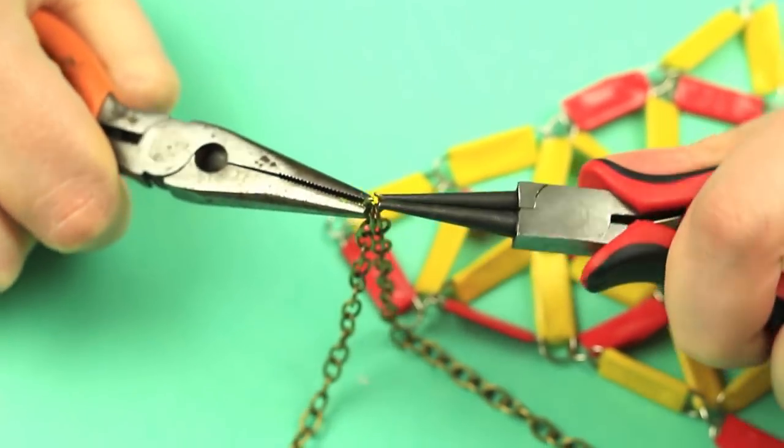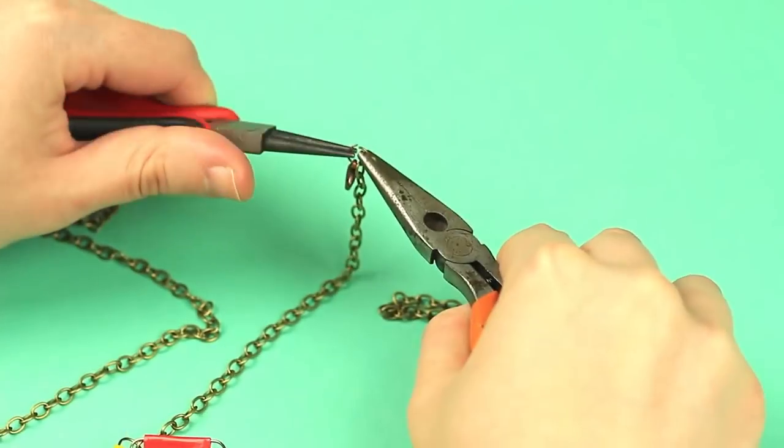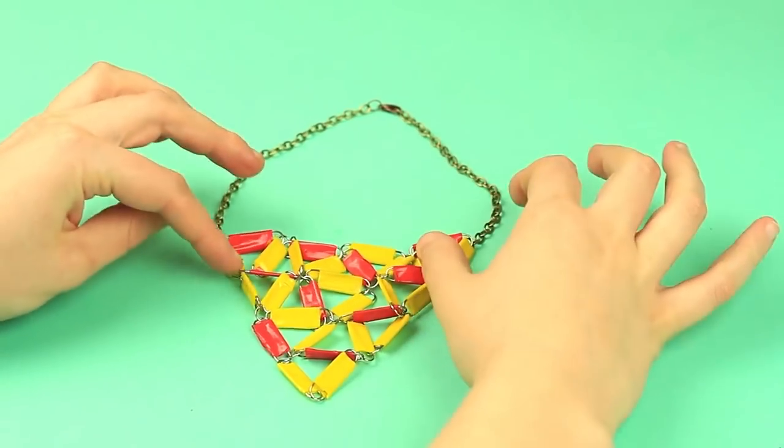Put the two vertices on the chain links. Fasten a lobster clasp. The bright colorful geometric necklace will enrich your jewelry collections.